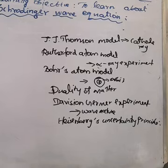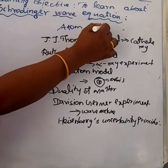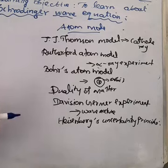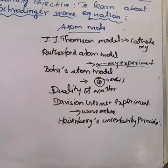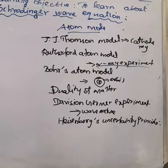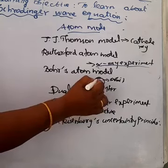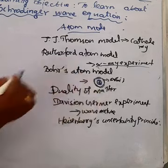What we have learnt in previous classes? First, we studied about the atom model — J.J. Thomson atom model, Rutherford atom model. Rutherford did an experiment with alpha rays with a gold foil. And then Bohr atom model.